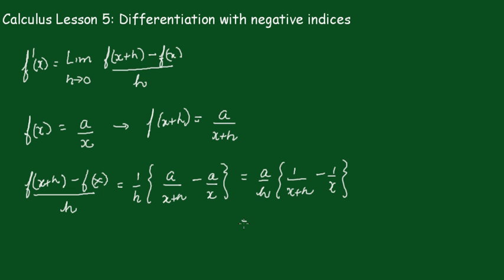Now I'll put this over a common denominator, which gives [x - (x+h)]/[x(x+h)].